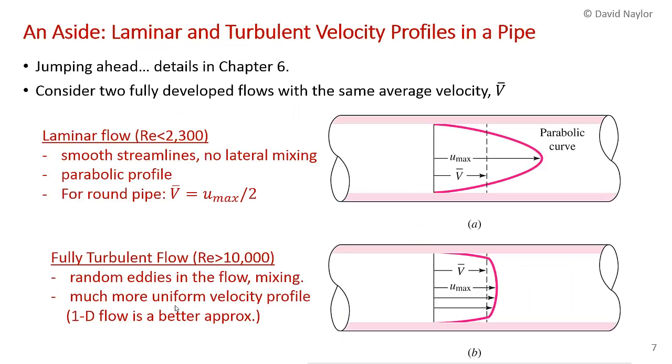As an aside, I thought I'd say a few words about the different velocity profiles you get in laminar and turbulent flows in pipes. This is jumping ahead, but it's worth mentioning now and you'll hear it again when we talk about pipe flow in chapter 6. If you consider two fully developed flows—by fully developed I mean flows in a pipe well away from the entrance where the velocity profiles become fully established—with the same average velocity V̄, if you have a low Reynolds number, you get laminar flow.